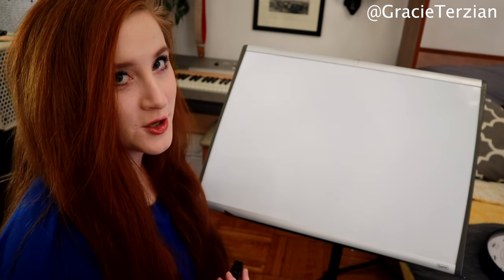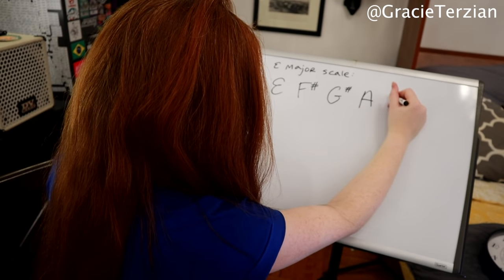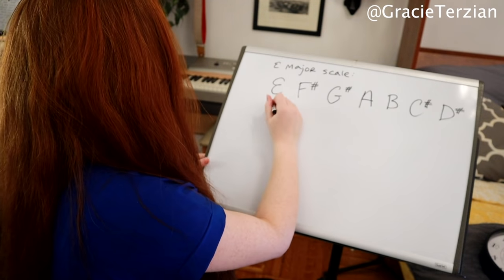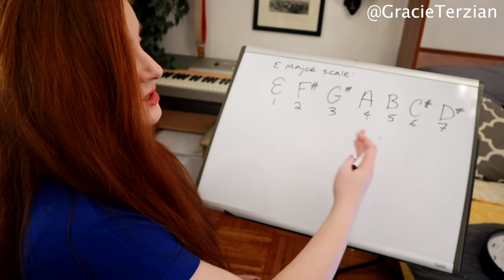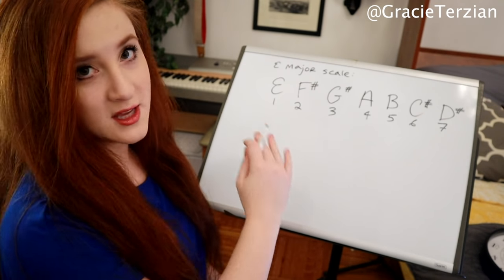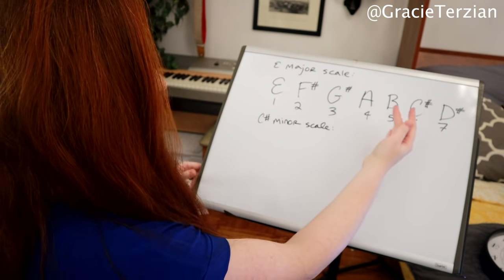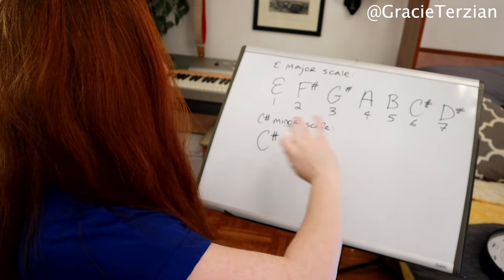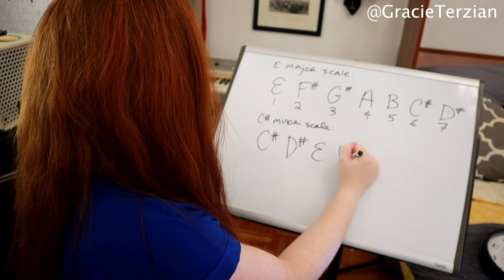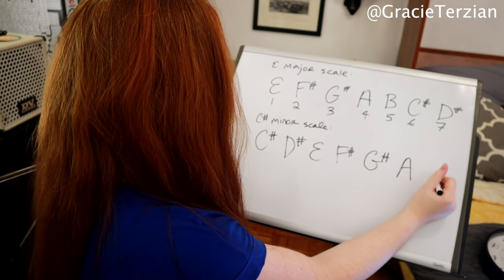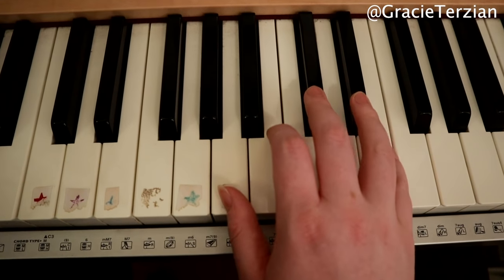What is the relative minor of E major? First, let's write out our E major scale, then number it: one, two, three, four, five, six, seven. The sixth degree is C sharp. Therefore, C sharp minor is the relative minor of E major. Let's write out a C sharp minor scale — it has the exact same notes as E major, just starting on C sharp: C sharp, D sharp, E, F sharp, G sharp, A, and B. Let's listen to an E major scale, then a C sharp minor scale.